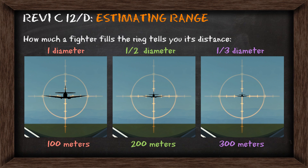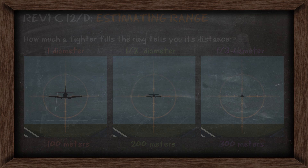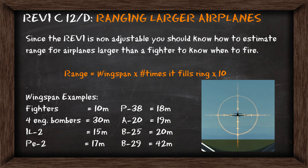Just like the Mark II sight, we can estimate range of a fighter very easily. If it fills the ring, it's going to be 100m away. If it fills half the diameter, it's going to be 200m. And if it fills up one third of the diameter, it's going to be 300m away. Since the REVI is not adjustable, you should know how to estimate range for airplanes larger than a fighter to know when to fire.